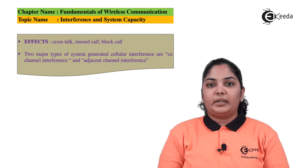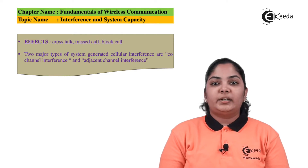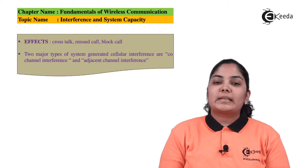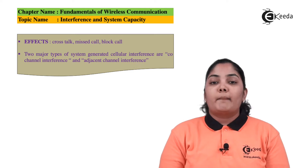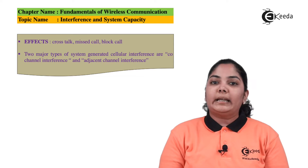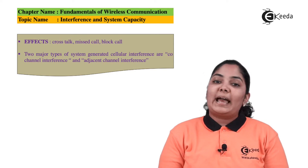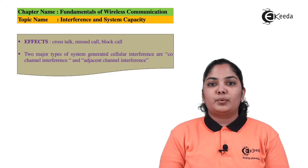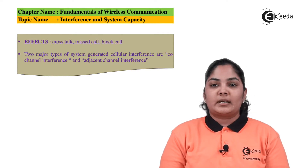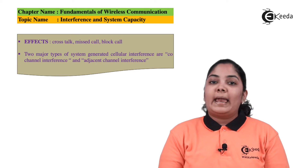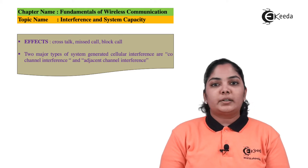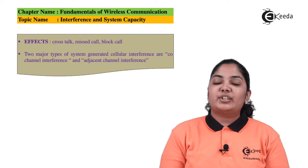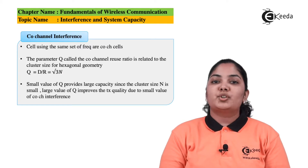The two major types of interference are co-channel interference and adjacent channel interference. Co-channel interference occurs because two cells are using the same set of frequencies but are not geographically far apart, causing their signals to radiate into each other. Adjacent channel interference means a neighboring cell is using frequencies adjacent to mine, and if not filtered properly, those frequencies may interfere with our system.